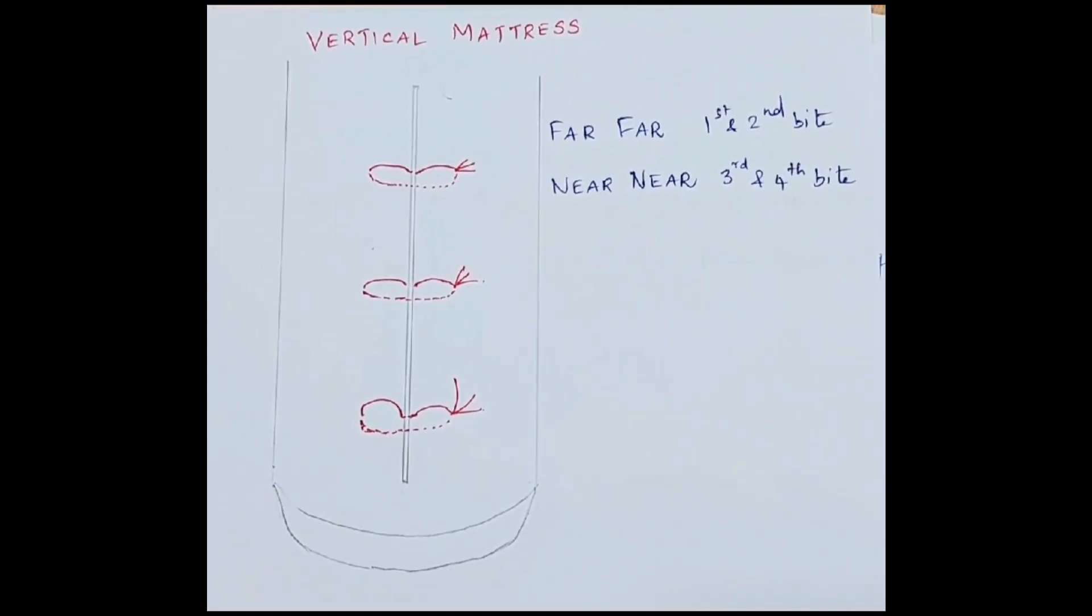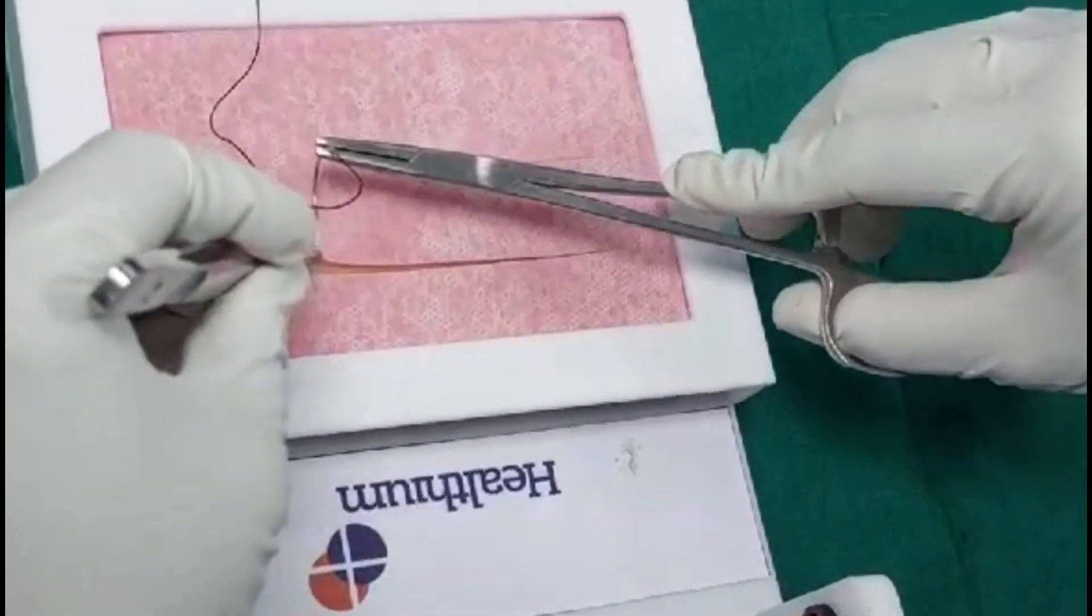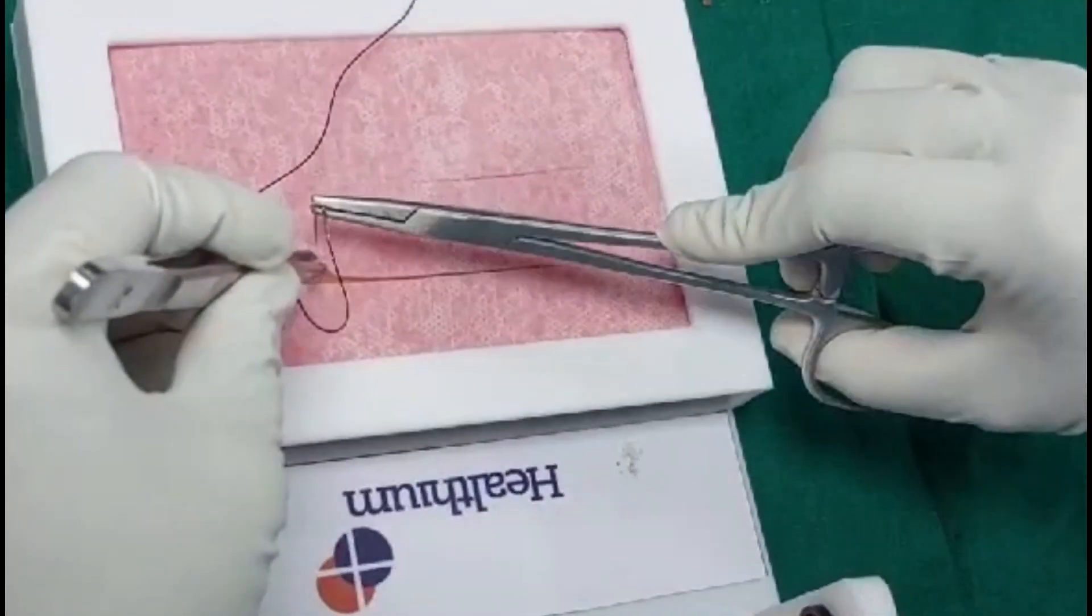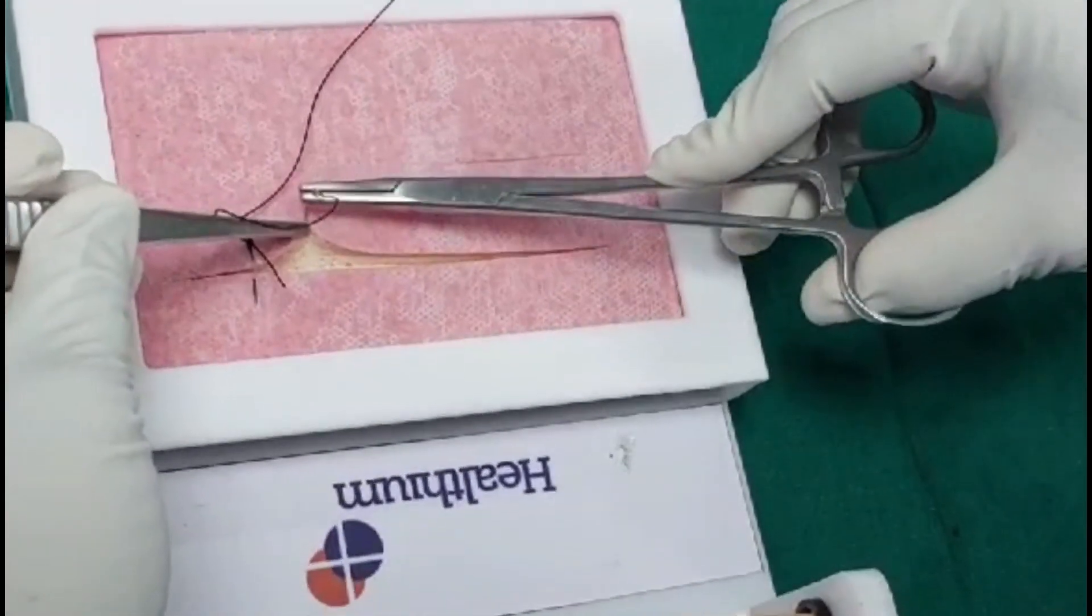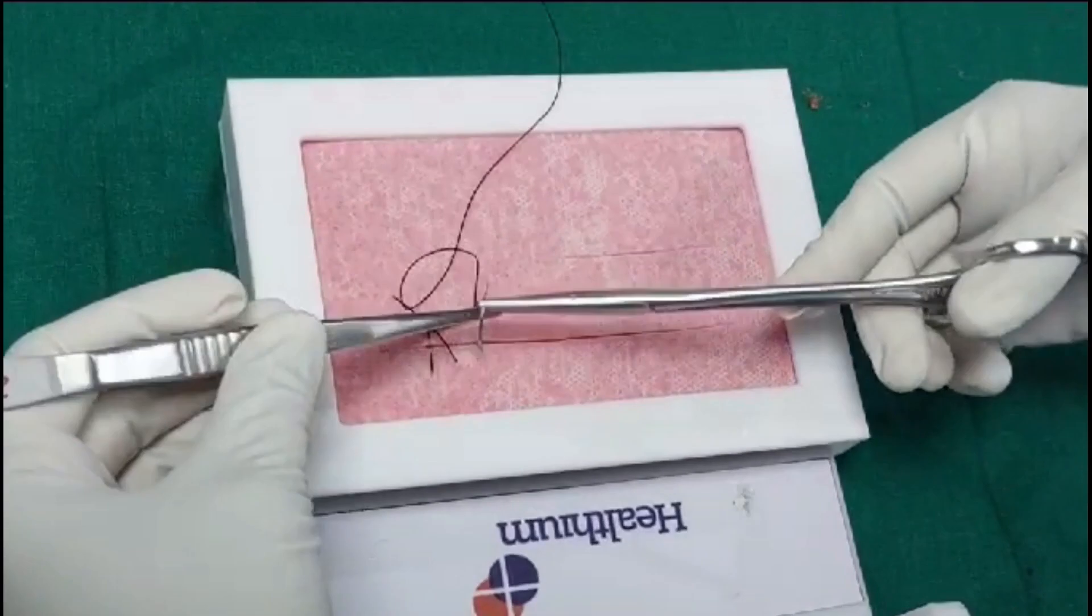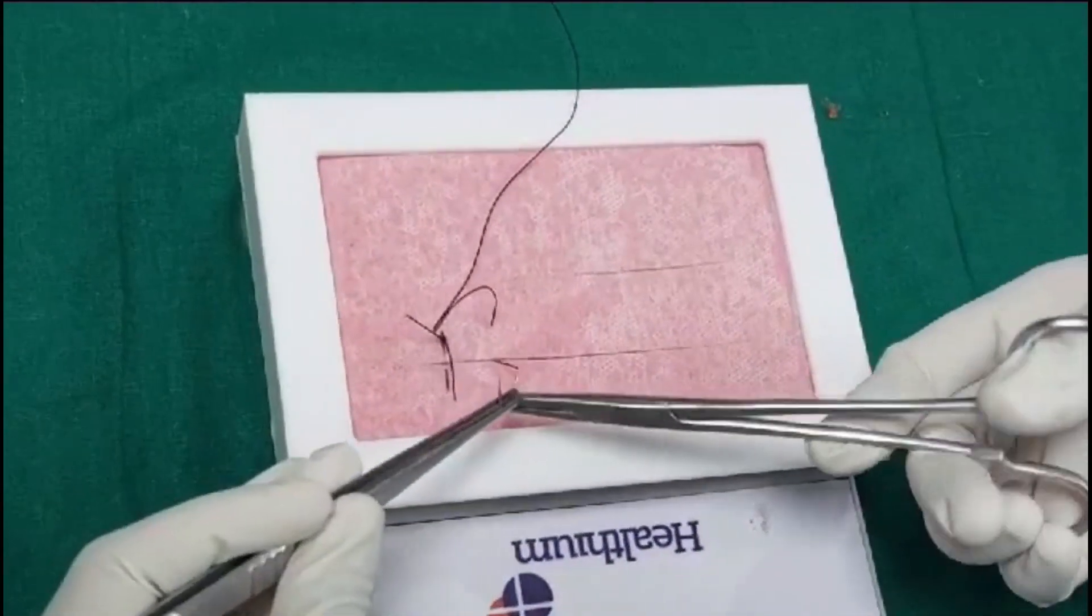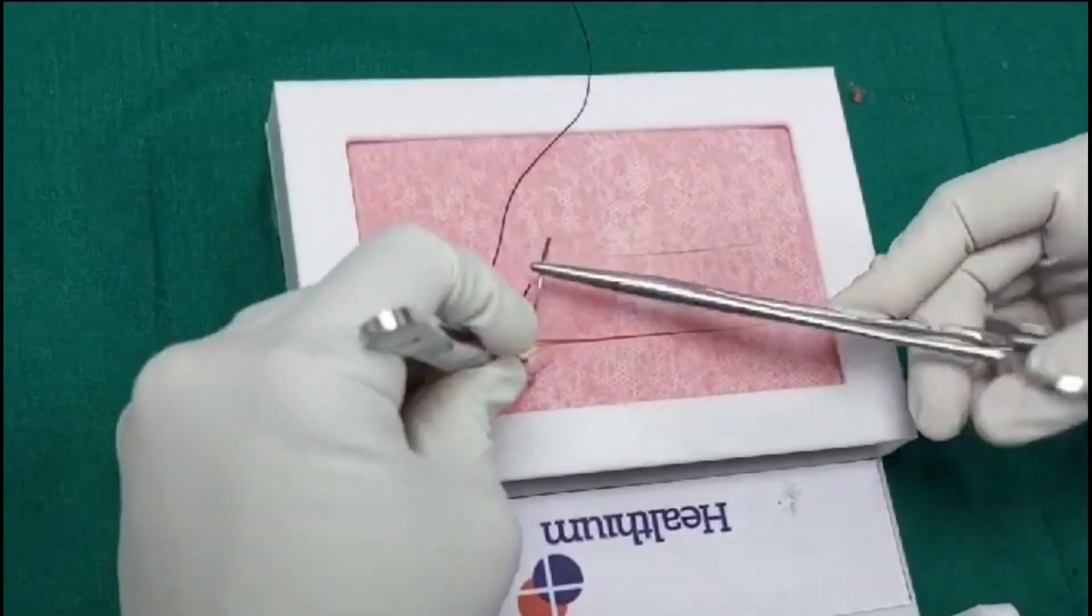First, far-far components are taken initially. First far bite is taken, the needle is removed by supination of the hand. Second far bite is taken directly across in a mirror image fashion on the opposite side.